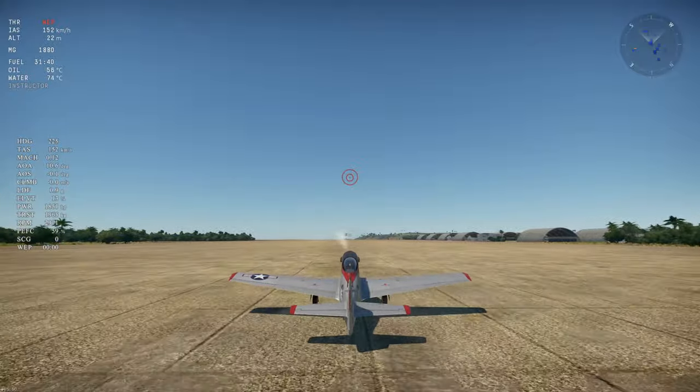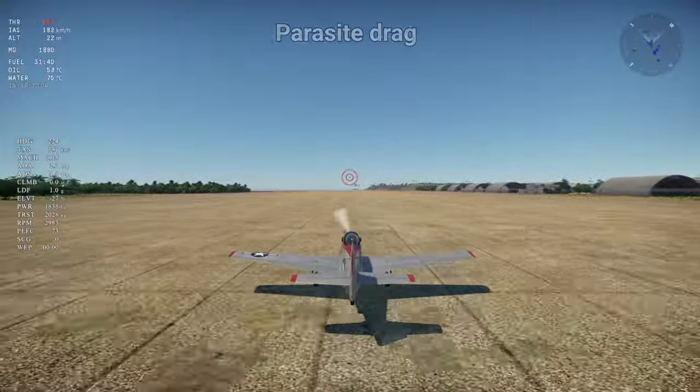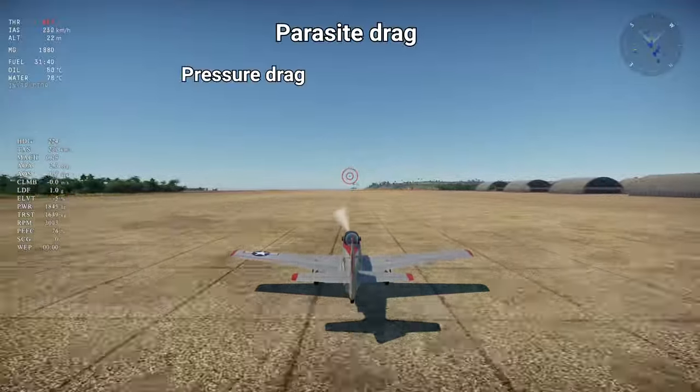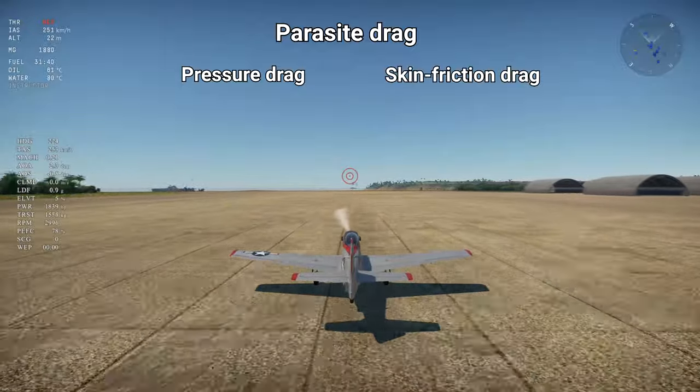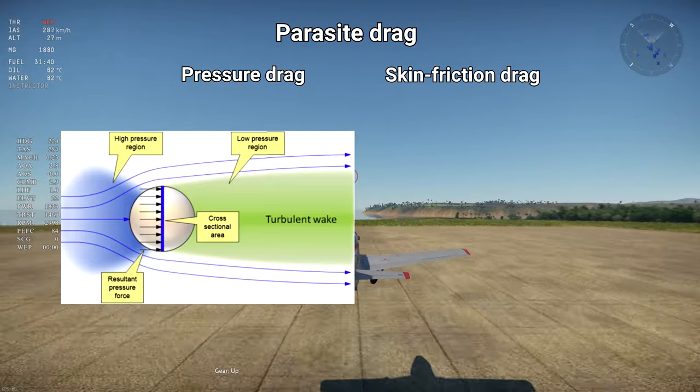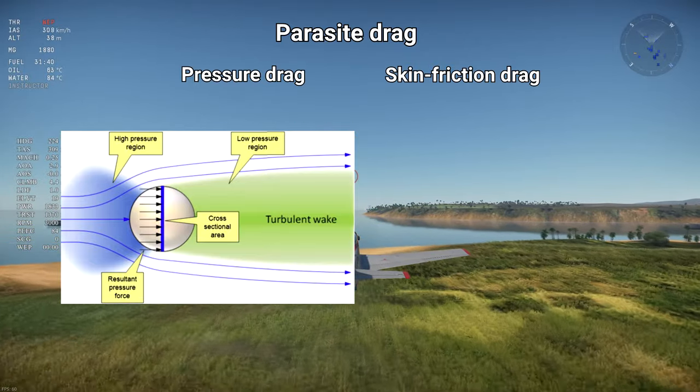There are a few types of drag. The one we're interested in today is parasite drag, which is divided into two categories: pressure drag and skin friction drag. Pressure drag comes from the difference between the higher pressure at the front of the object and the lower pressure at the back of the object, pretty intuitive.